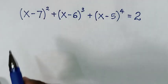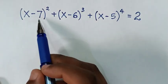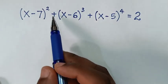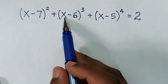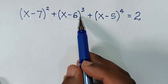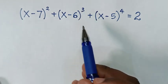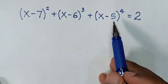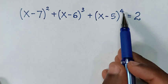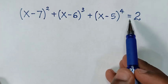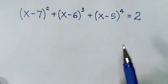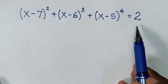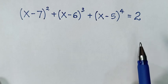Hello! How to solve (x-7)² + (x-6)³ + (x-5)⁴ = 2, to find the value of x from this equation.